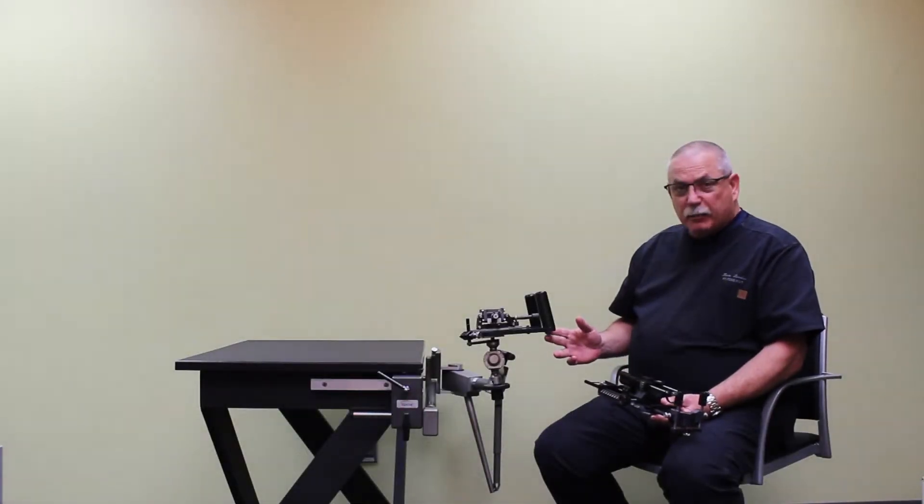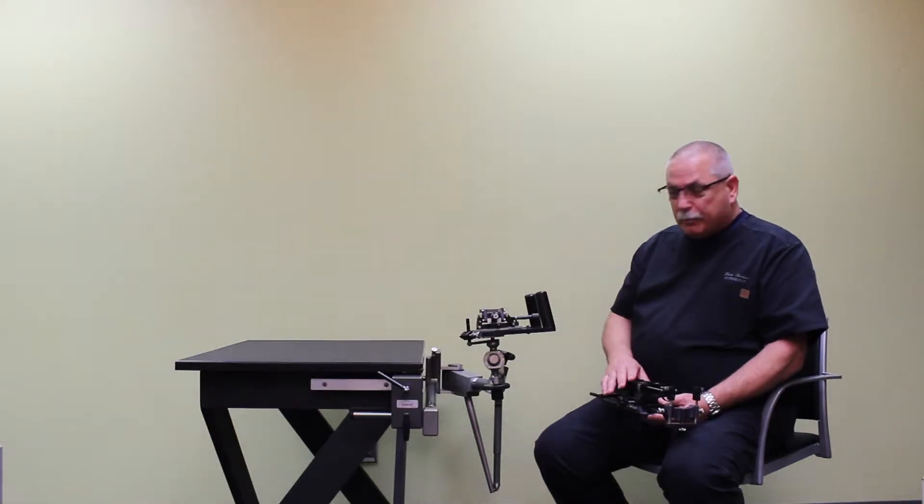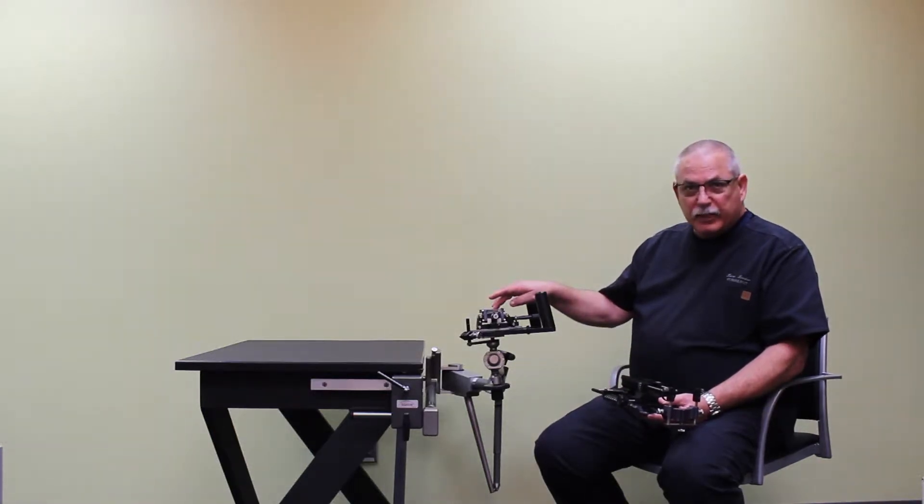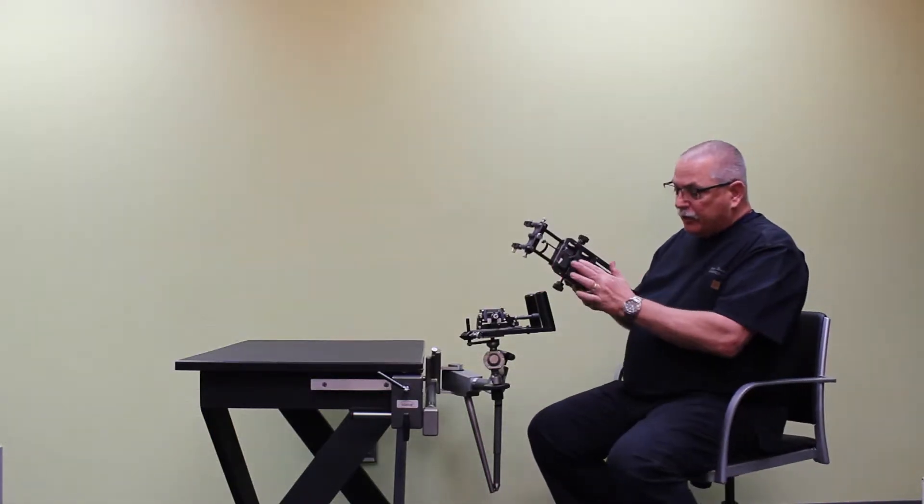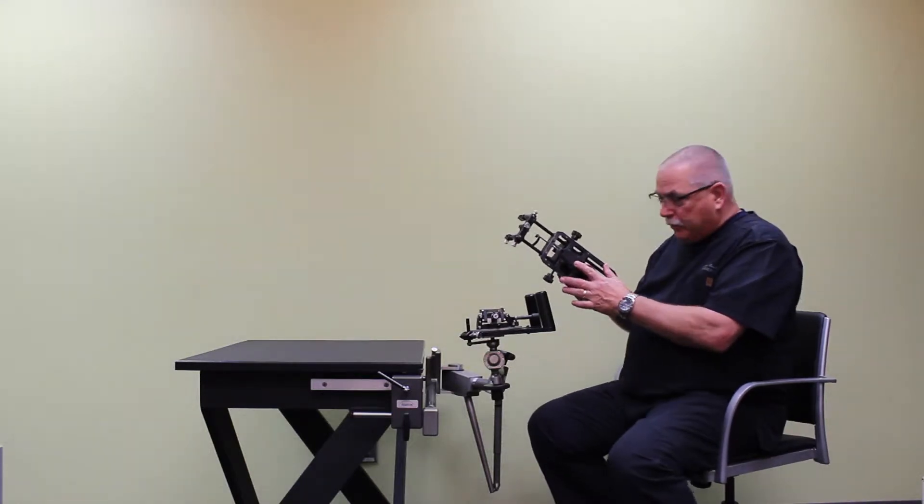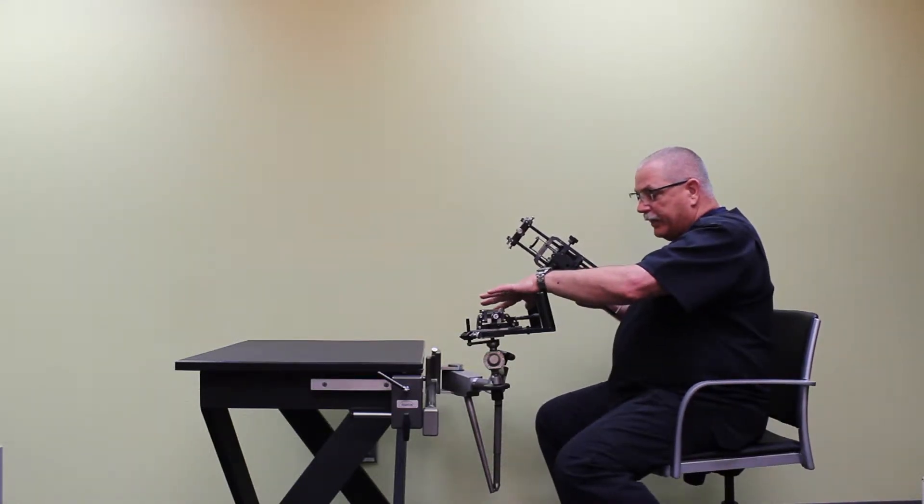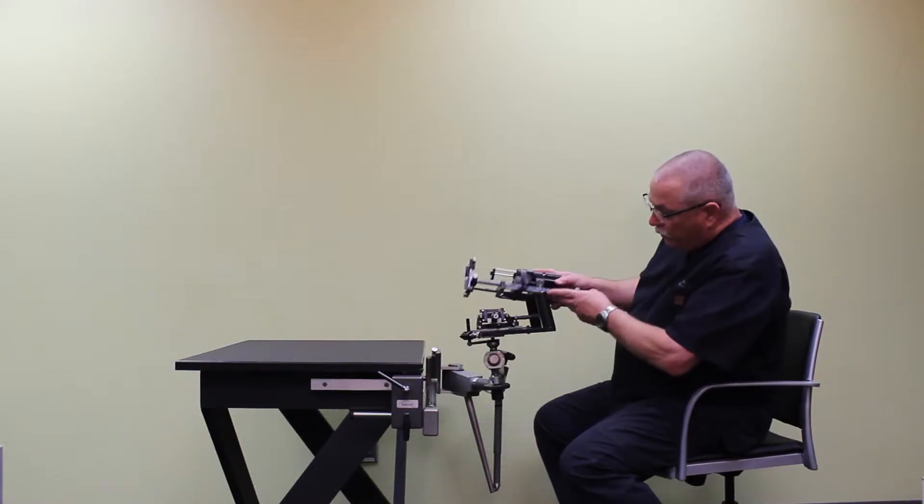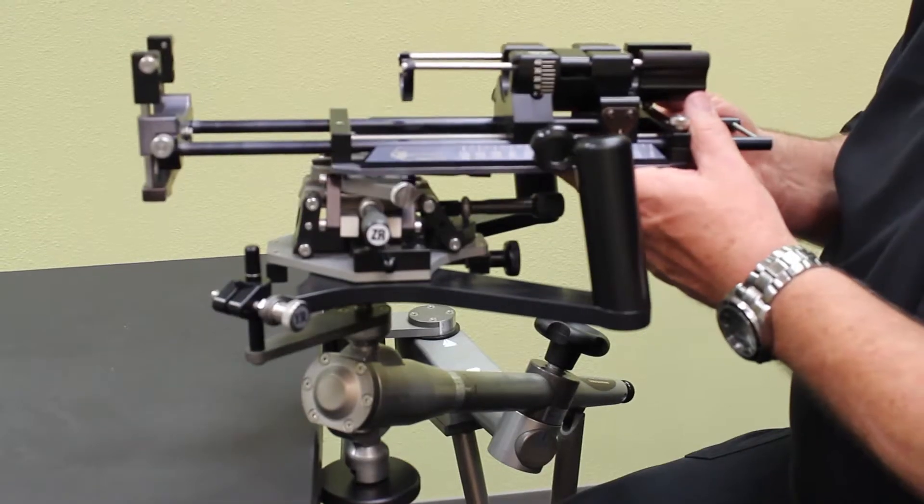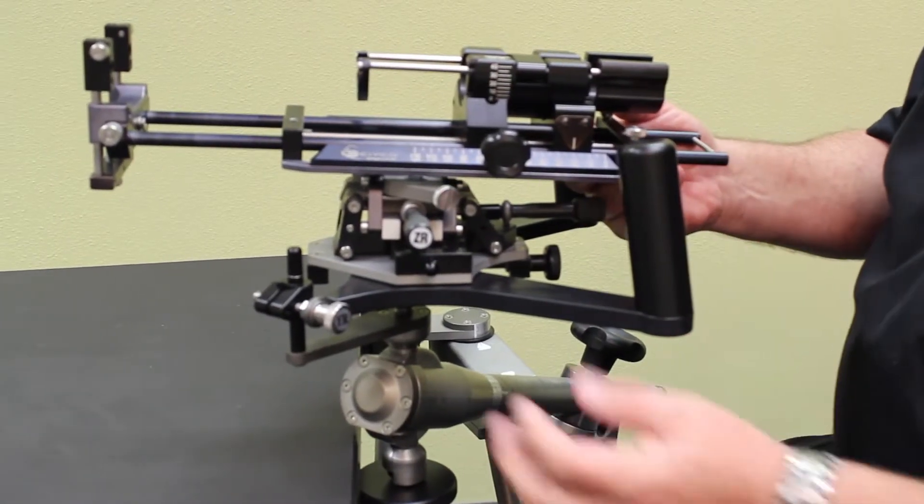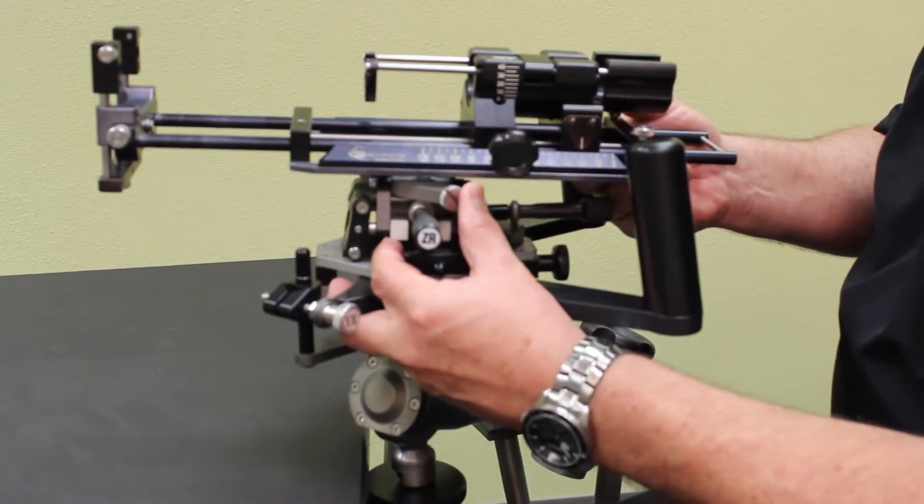Now that we've attached the stabilizer to the table, the next step is to attach your classic stepper onto the micro touch stabilizer. You'll notice a triangular shaped plate on the bottom of the stepper and also a triangular shaped plate on the top of the stabilizer. We want to slide one into the other, and then using this knob, we'll tighten it down.